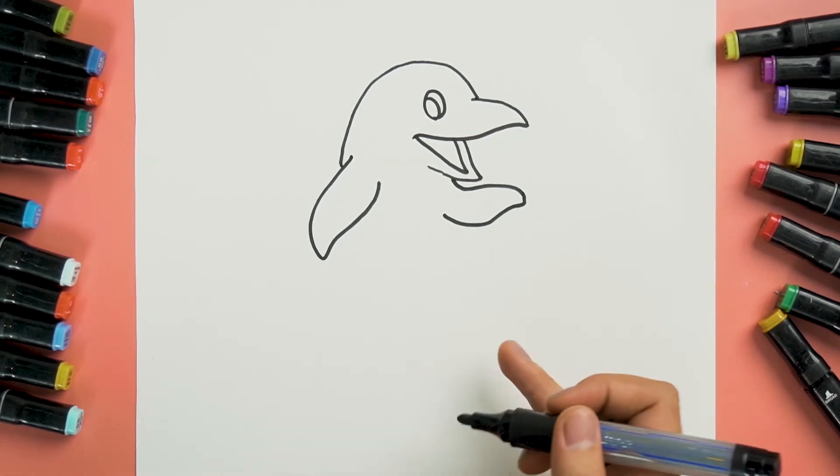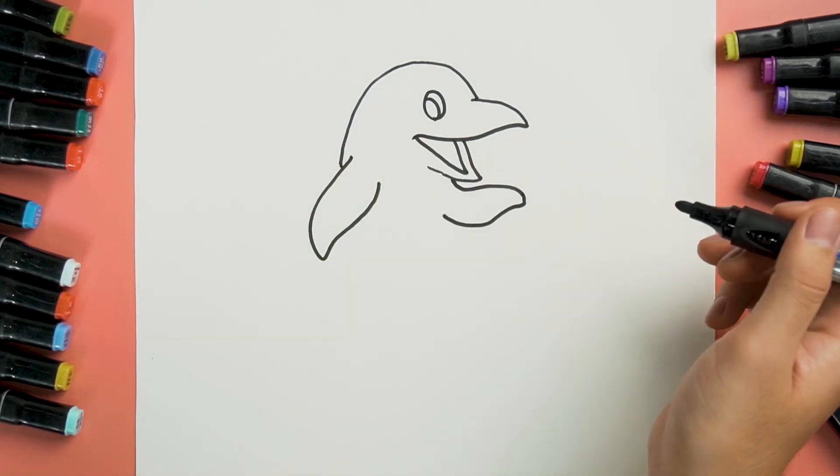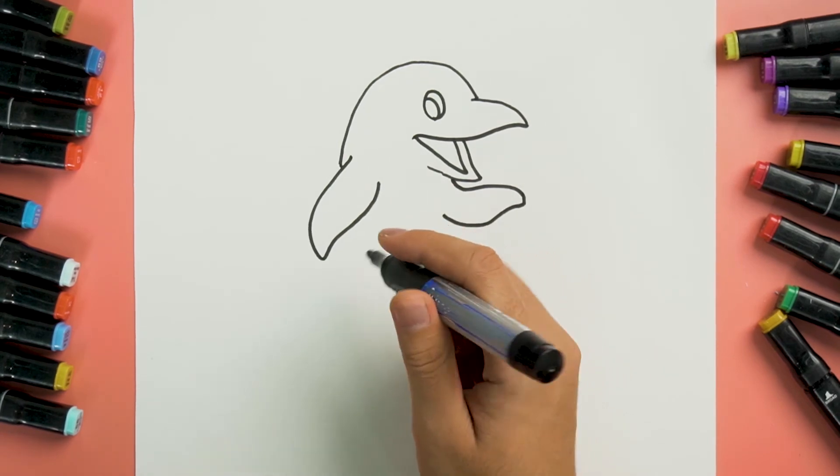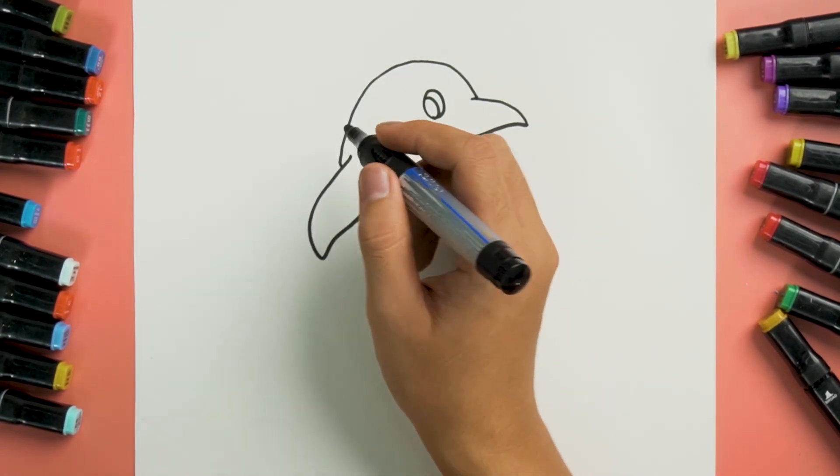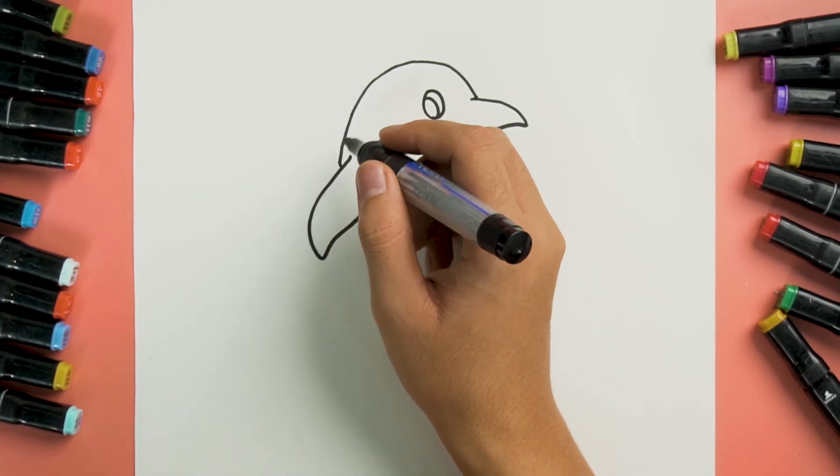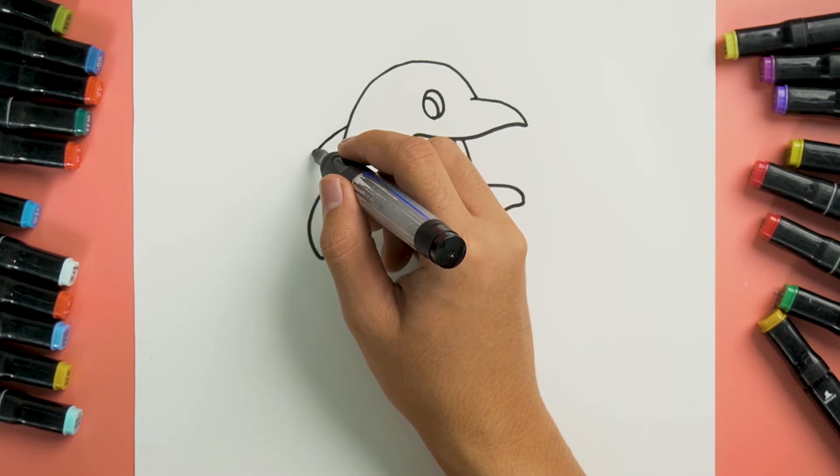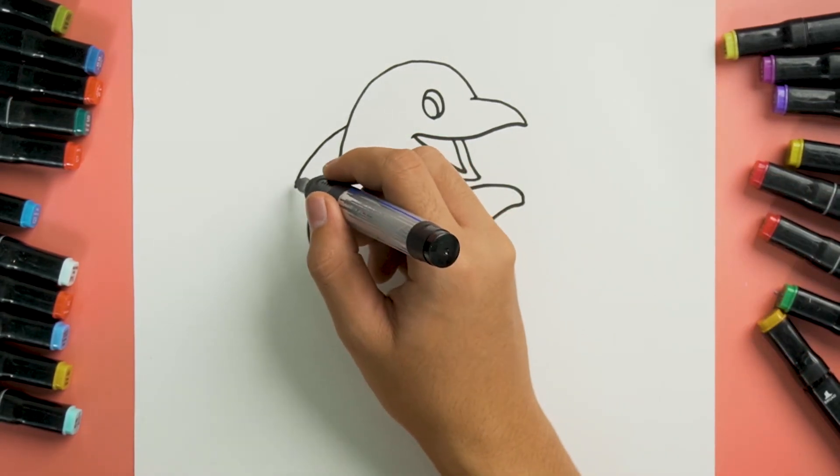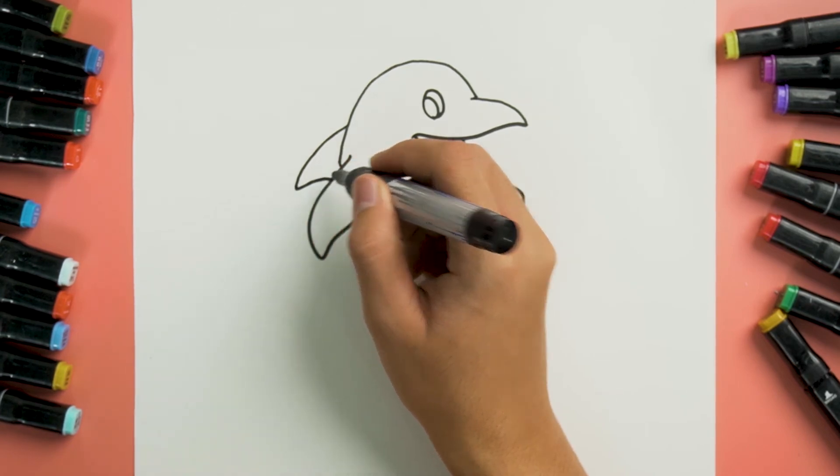After that, we are going to draw his fins at his back. One more stroke from his back and one more stroke from his flippers. That's so cute.